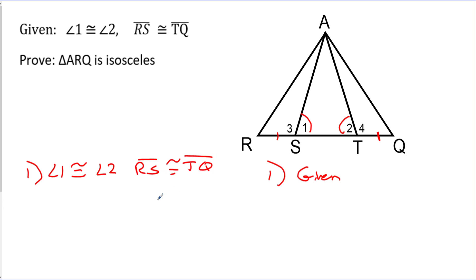So that's what we already know. There are probably some other things that we know but were not given to us. Let's take a step back and talk about ARQ. When you're doing proofs, you want to look at: how am I going to get to this answer? What are things I need to know in order to get to triangle ARQ as isosceles? Triangle ARQ is the big triangle. If I can prove that any two sides of this triangle are equal, that would be enough to say the entire triangle is isosceles.